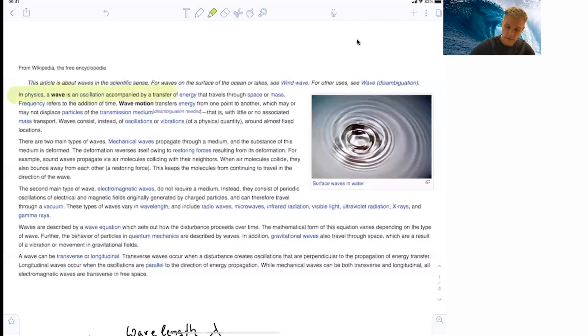It starts with saying that, in physics, a wave is an oscillation accompanied by the transfer of energy that travels through space or mass. It continues then talking about the various types of waves. And it makes the distinction between mechanical waves, which travel through a medium or substance, and the deformation of the substance is reversed by restoring force.